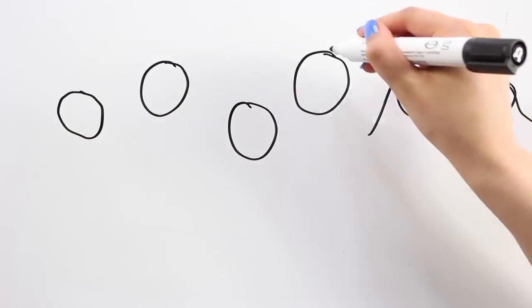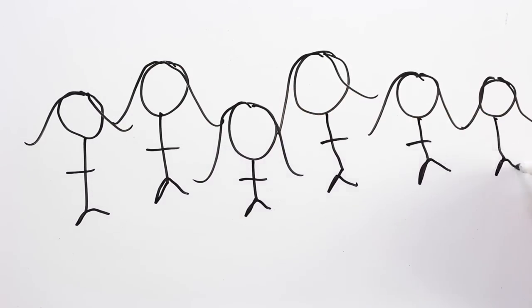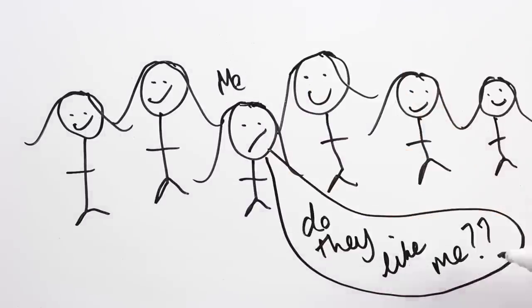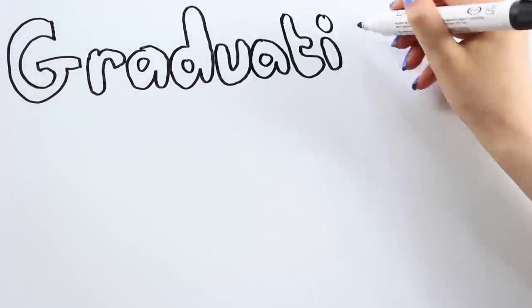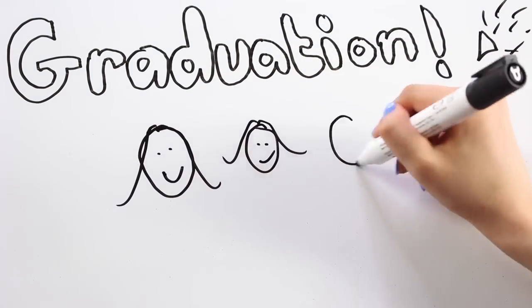School life was also a bit of a struggle for me because I didn't always feel like people wanted me around, so I became quite defensive of myself which made it hard for me to make friends. As I got older this wasn't as much of a problem as everyone had matured and become a lot less catty, and by the time I left school I actually made some lifelong friends.